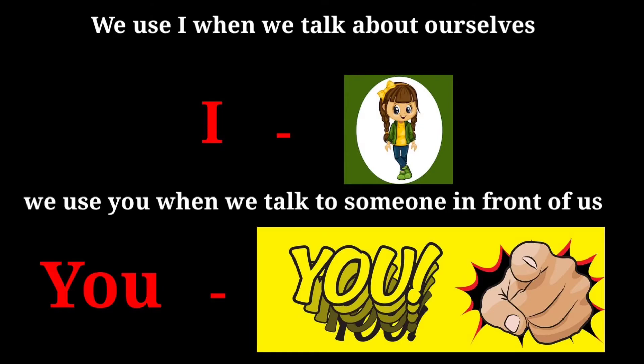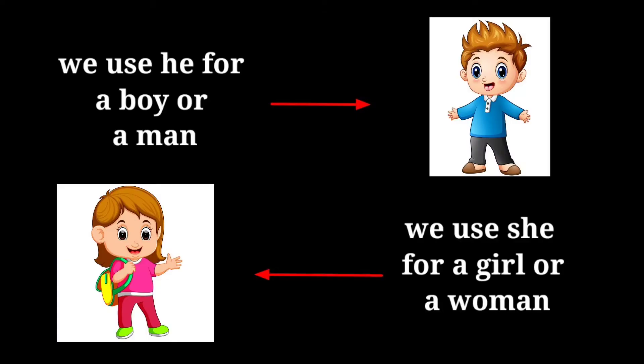Now we are going to learn about where to use he and she. First, we are going to learn about the uses of he. We use he for a boy or a man. And then, we use she for a girl or a woman. Have you understood where to use he and she?